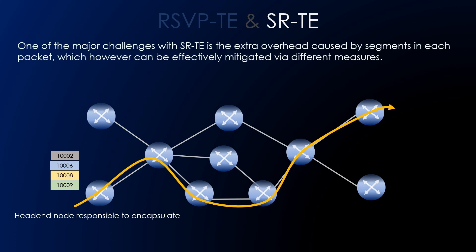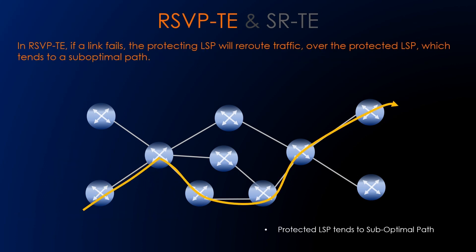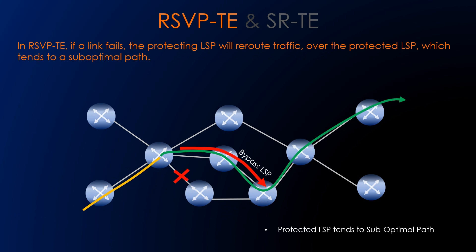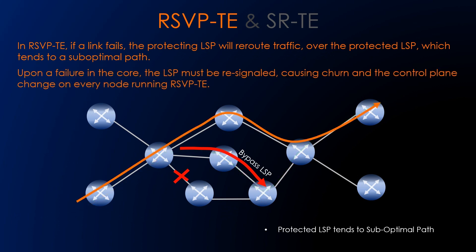One of the major challenges with segment routing is the extra overhead caused by segments in each packet, which can be effectively mitigated via different measures. In case of RSVP-TE, if a link fails, the protecting LSP will reroute traffic over the protected LSP, which tends to a sub-optimal path. Upon failure, the core LSP must be resignaled, causing churn and control plane changes on every node running RSVP-TE.